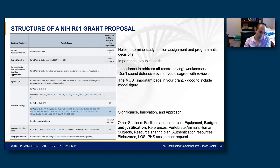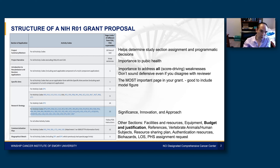I think I would address all weaknesses because as a reviewer, when I see concerns that are kind of dismissed by the applicant, sometimes you're personally offended. So I think it's important to not sound defensive, even if you disagree with a reviewer. The aims page is one page — it's the single most important page in your grant. I think it's good to include a model figure just to give a big picture overview of that grant.